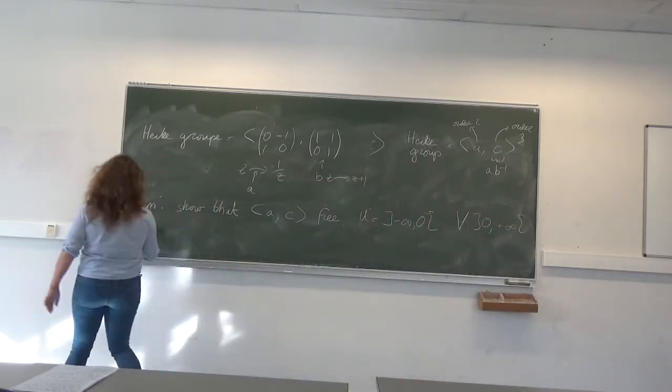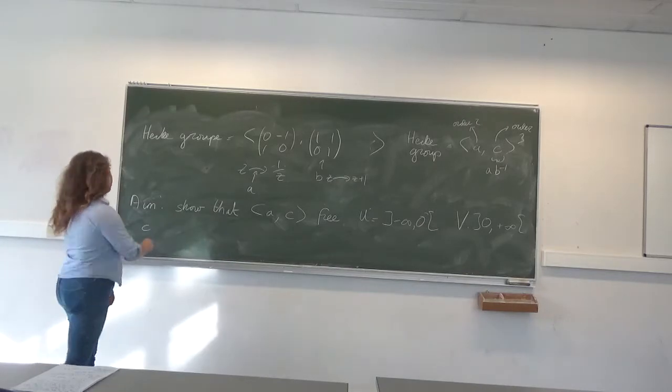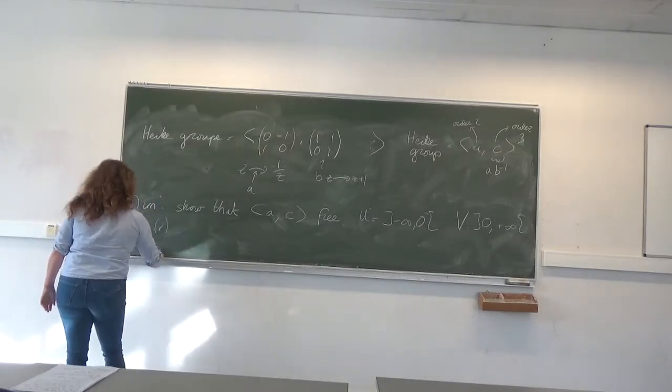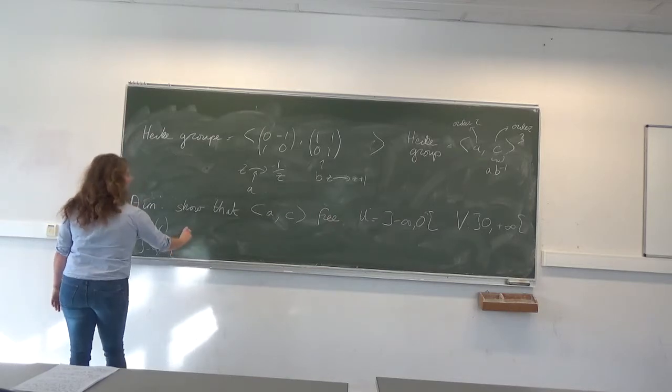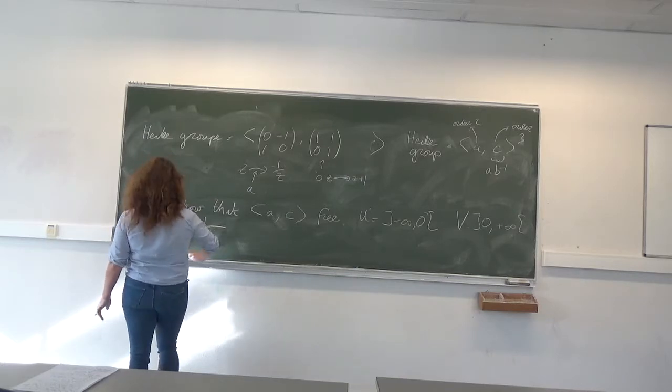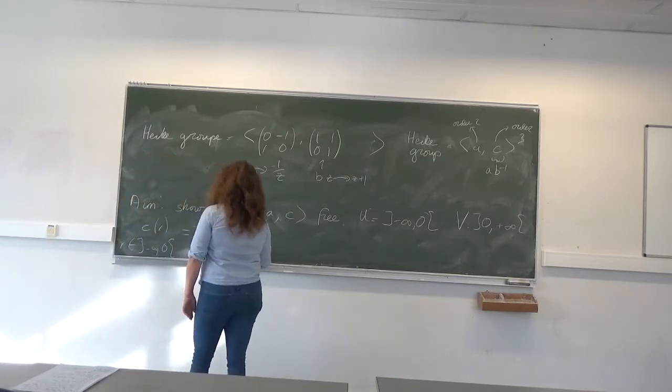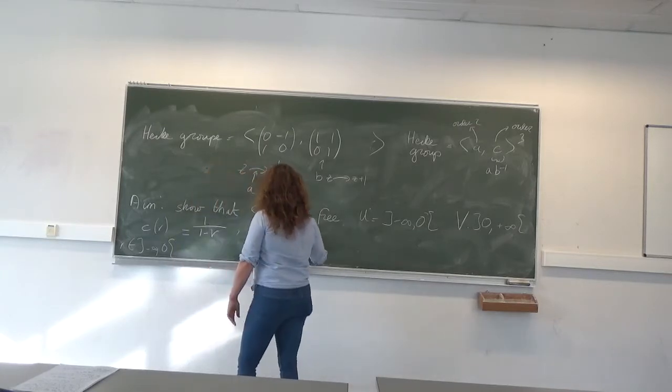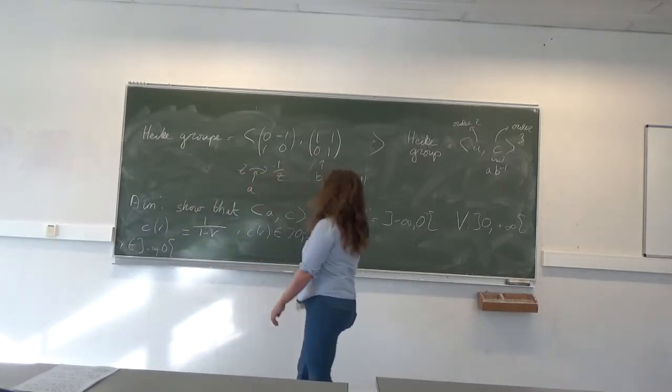Now I'm going to look at c applied to r, with r in (-∞, 0). This equals 1/(1-r), and what I notice is that c(r) is contained in (0, 1).